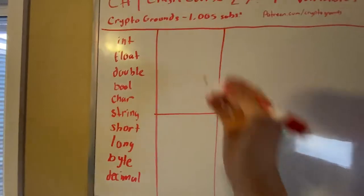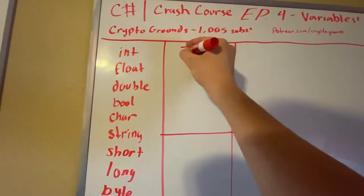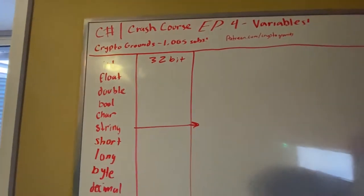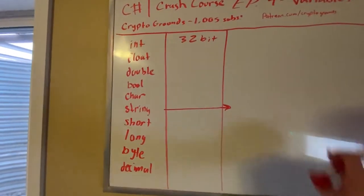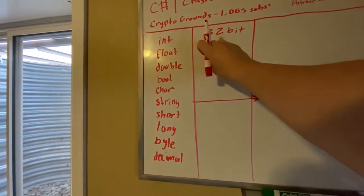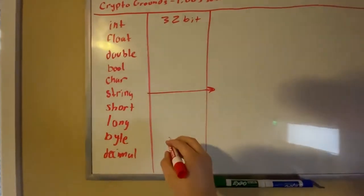First we're going to start with the size. So int is a 32-bit whole number. We have floats and double, I'm going to get to these ones first, but we're going to finish the whole numbers first.